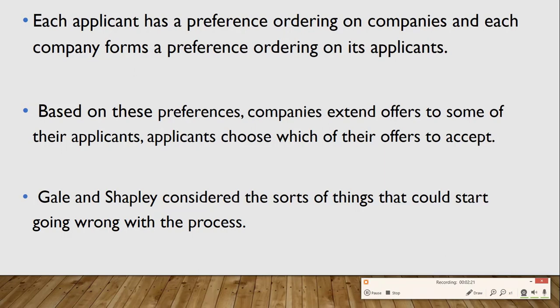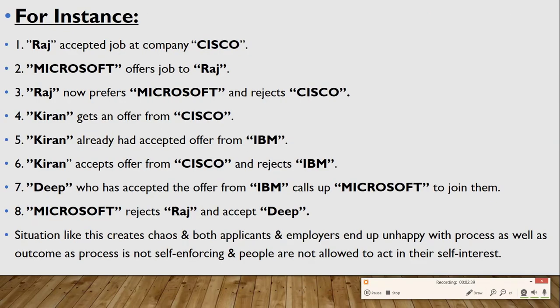Gale and Shapley were the people who considered the sort of things that could go wrong with the process. So exactly what could go wrong? For instance, let us take an example. Raj has accepted the job at Cisco. Now Microsoft offers a job to Raj, and Raj prefers Microsoft over Cisco. So what will he do now?